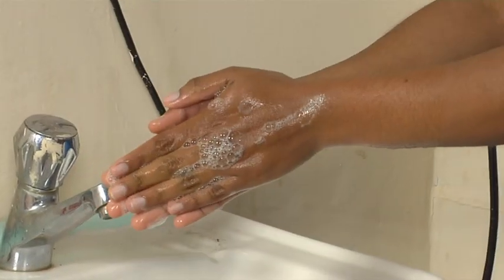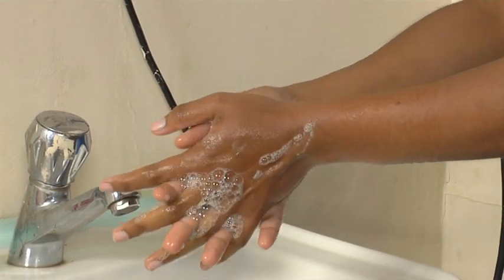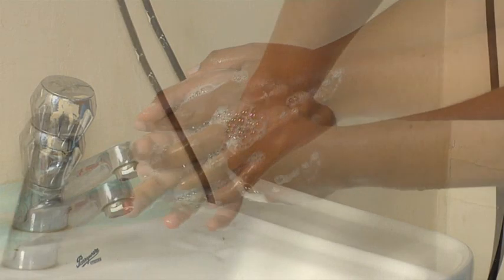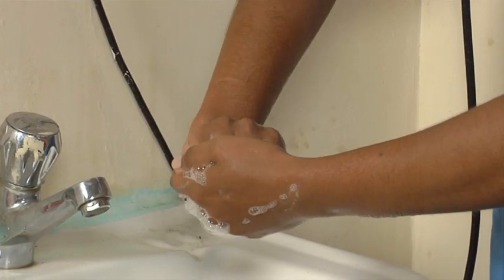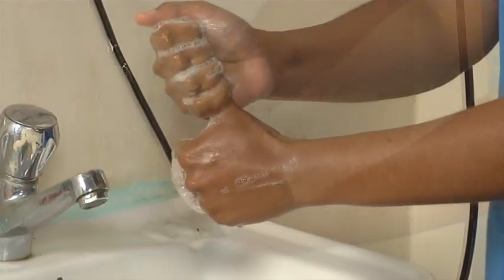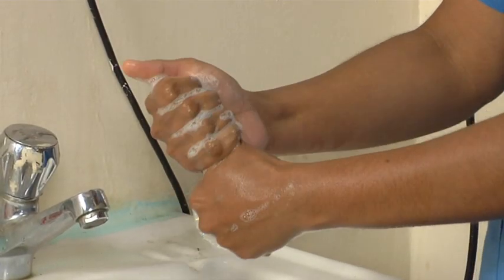Third, clean your palm to palm again with fingers interlocking. Then, clean the inner sides of the fingers one hand at a time. Also, clean the thumbs one hand at a time.